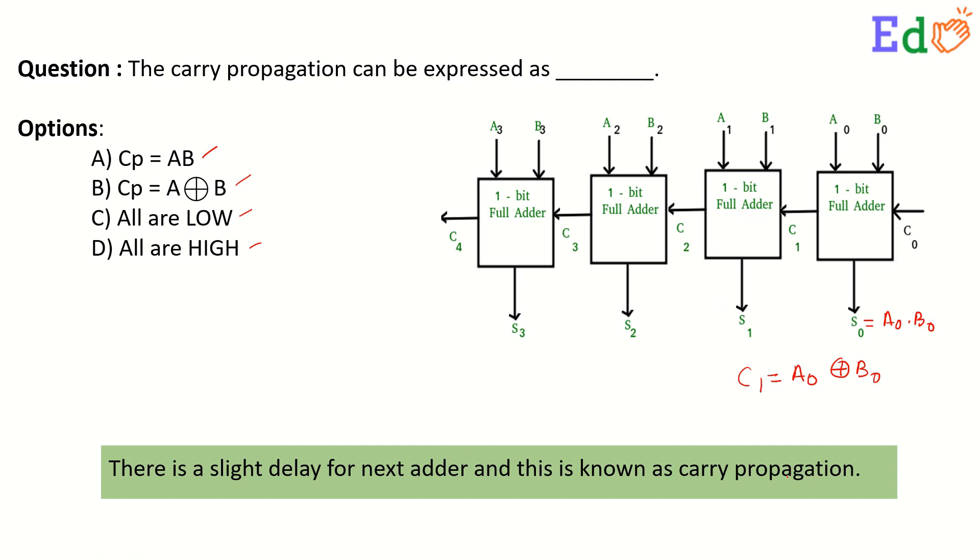So, there is this delay which is called the carry propagation. The correct answer to the question is option B: Cp = A XOR B.